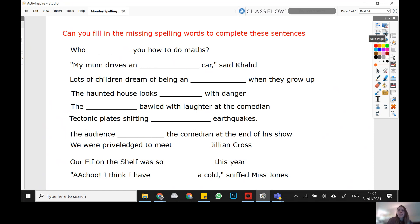Okay, hopefully you've written out all those sentences. I'm just going to quickly run through the answers. So we've got, who taught you how to do maths? My mum drives an automatic car, said Khaled. Lots of children dream of being an astronaut when they grow up. The haunted house looks fraught with danger. The audience bawled with laughter at the comedian.